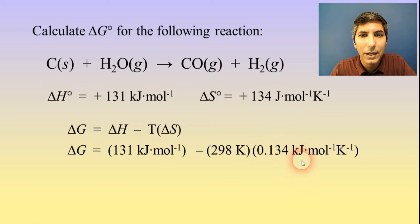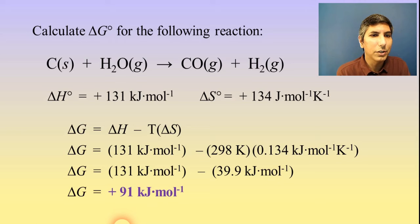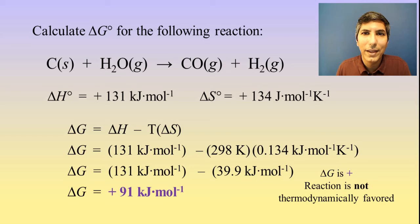So now we just do the math on this. And if we multiply these two values together, we get that we have 131 kilojoules per mole minus 39.9 kilojoules per mole. And when you subtract that, you find that the delta G for this process is equal to positive 91 kilojoules per mole. So what's the significance of that positive number? Well, like I said earlier, if it's positive, that means that this is not a thermodynamically favored process at this particular temperature.